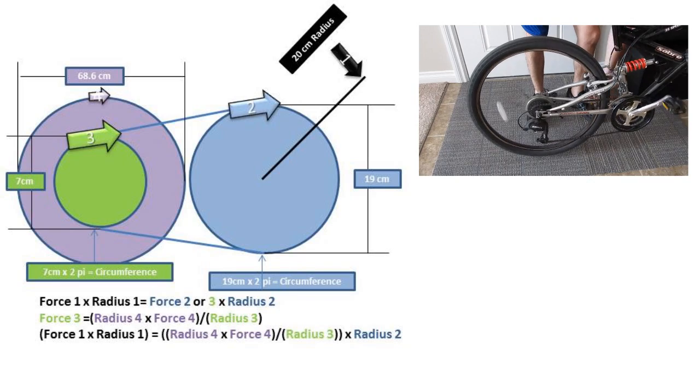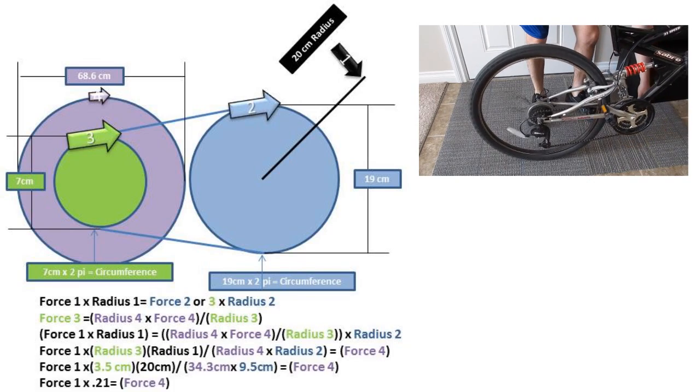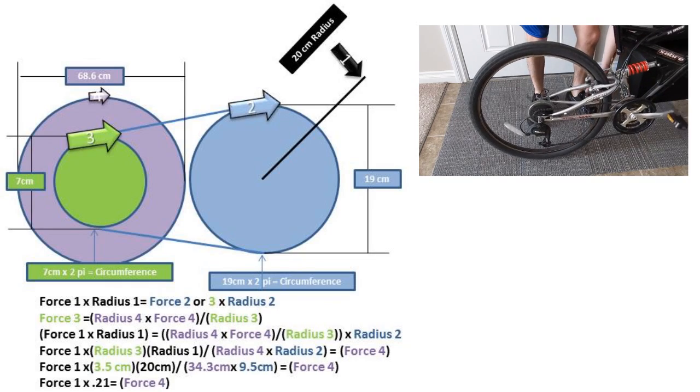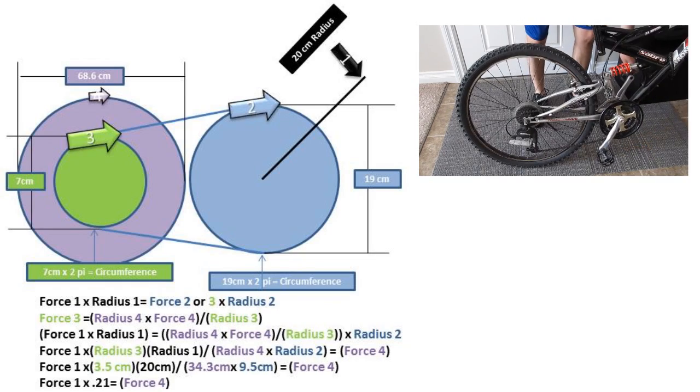After doing some rearranging of formulas, we are left with force 1 times radius 3 times radius 1 over radius 4 times radius 2 equals force 4.